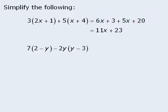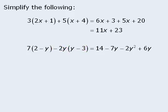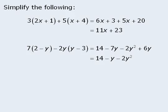We'll begin by expanding. So we will multiply 7 by 2 to get 14, and then we'll multiply 7 by negative y to get minus 7y. From here we'll multiply negative 2y by y to get minus 2y squared, and then negative 2y times negative 3 to get plus 6y. From here we can simplify: since we have no other constant terms to combine with 14, we leave that as is. Negative 7y plus 6y equals negative 1y or minus y. And we have no other terms to combine with negative 2y squared, so we leave that as is. We can reorder the terms to get negative 2y squared minus y plus 14.